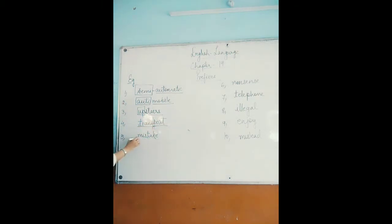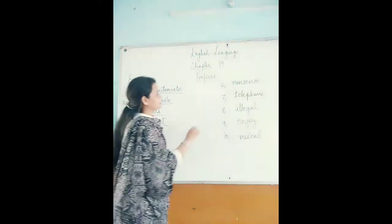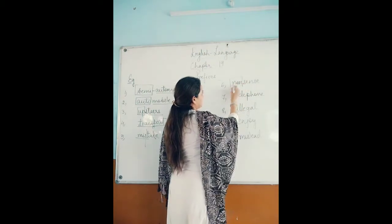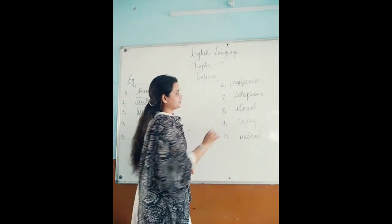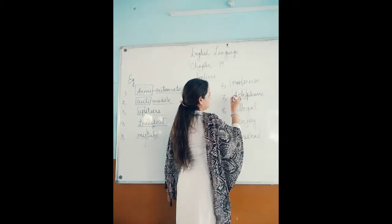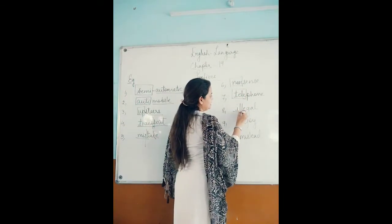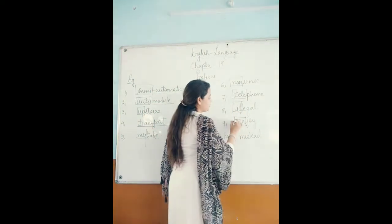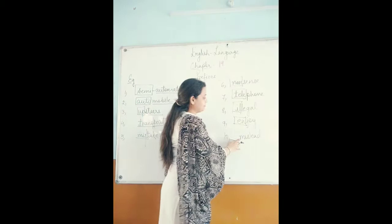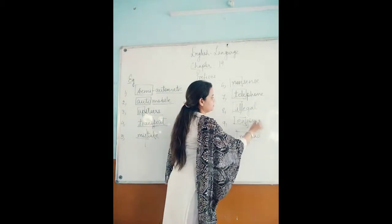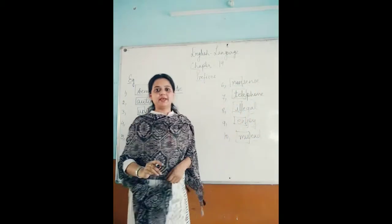In mistake, mis is the prefix and take is the root word. In nonsense, non is the prefix and sense is the root word. Then telephone — tele is the prefix. In illegal, il is the prefix. In enjoy, en is the prefix. In mislead, mis is the prefix. The rest of the words are the base word.